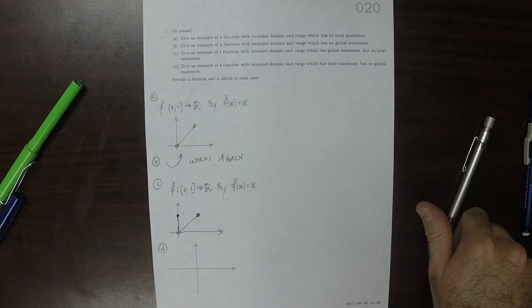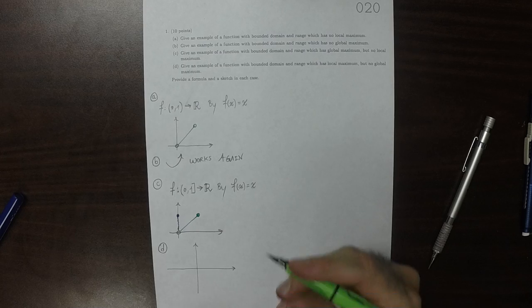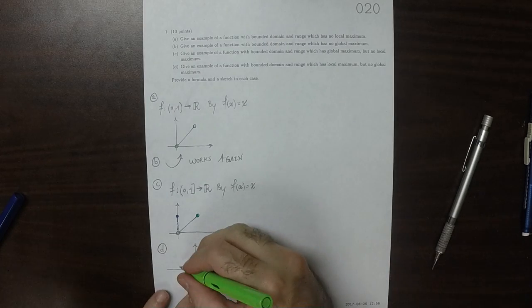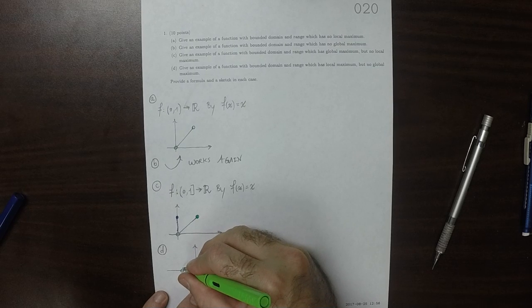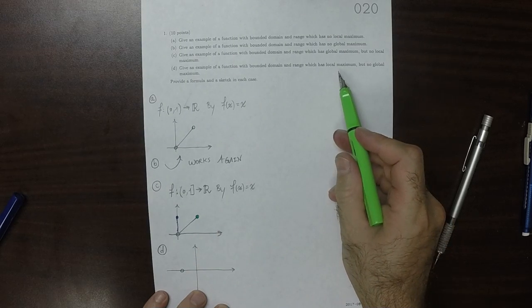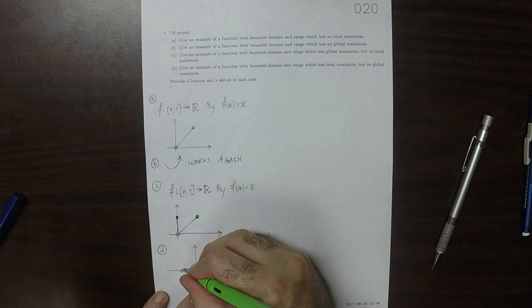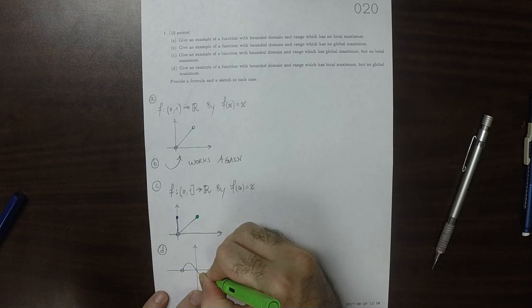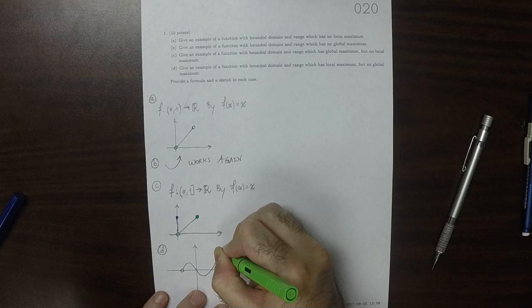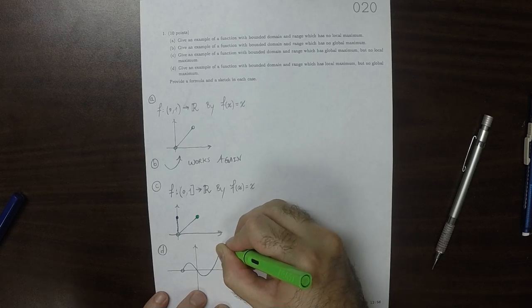So I'm going to take a piece of a cubic and make it do the following. So I want to have a local maximum but not a global maximum. OK. So I'll make it go up, down, up, high to right here.